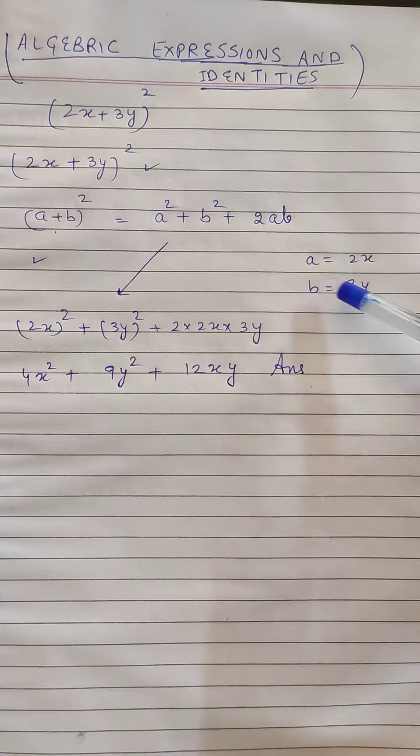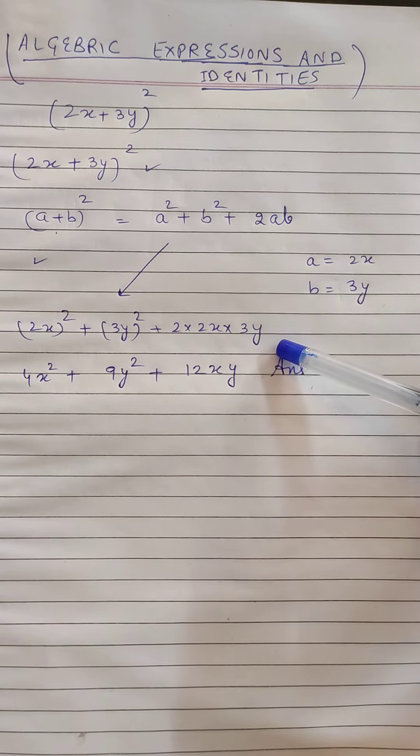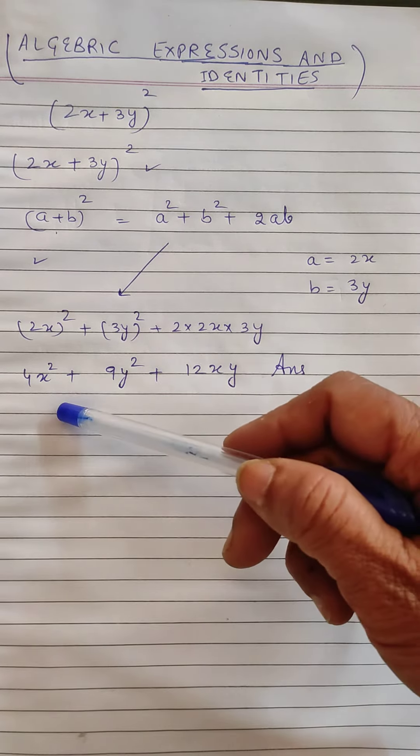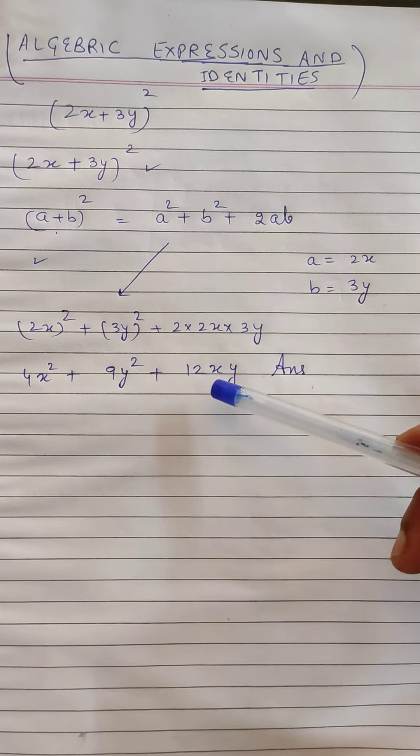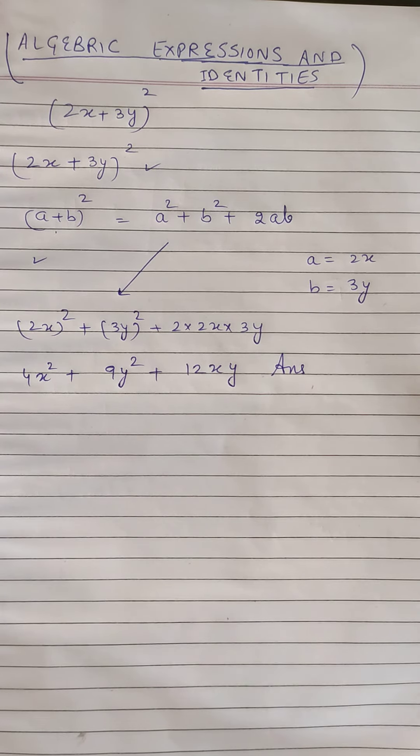And 2ab will be 2 into 2x plus 3y, so it gives us 4x² + 9y² + 12xy. Understood? Yes.